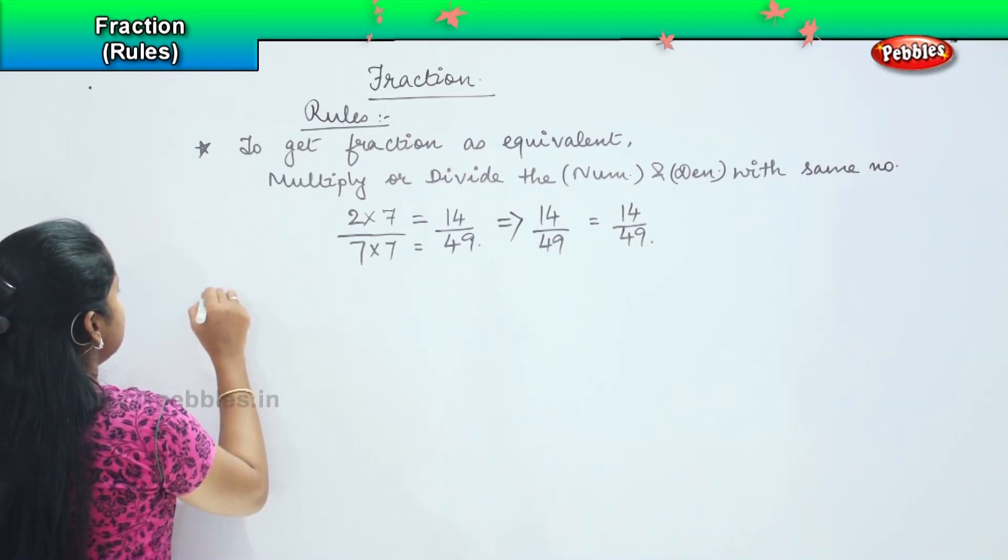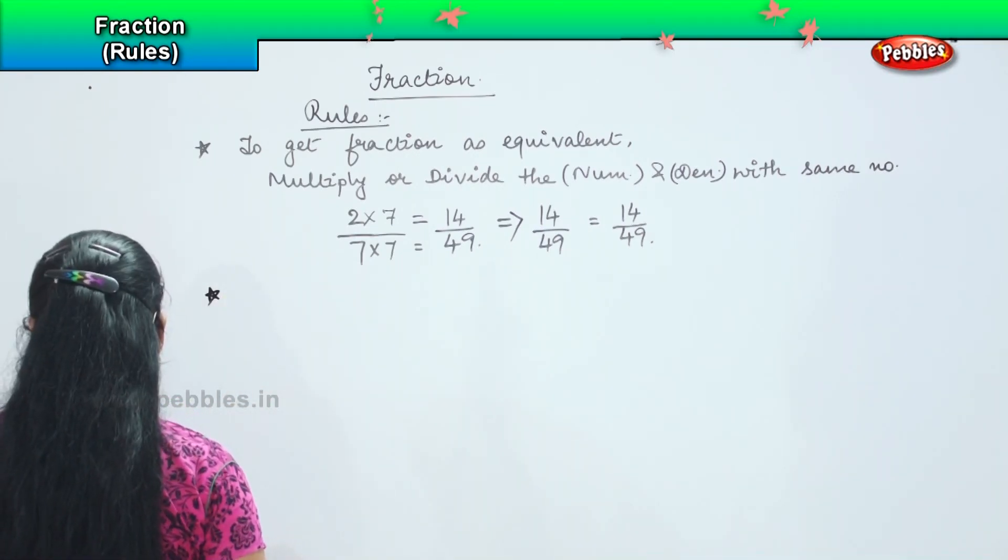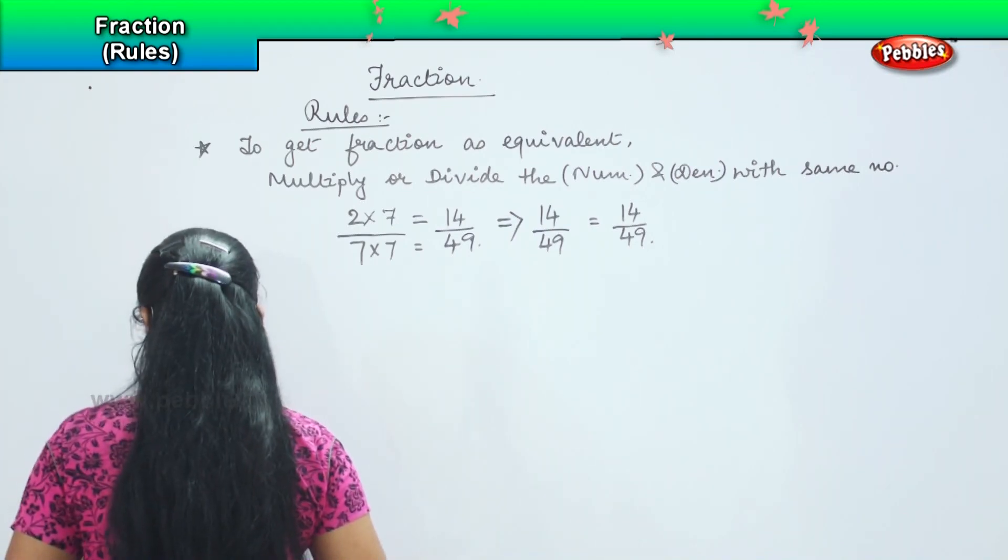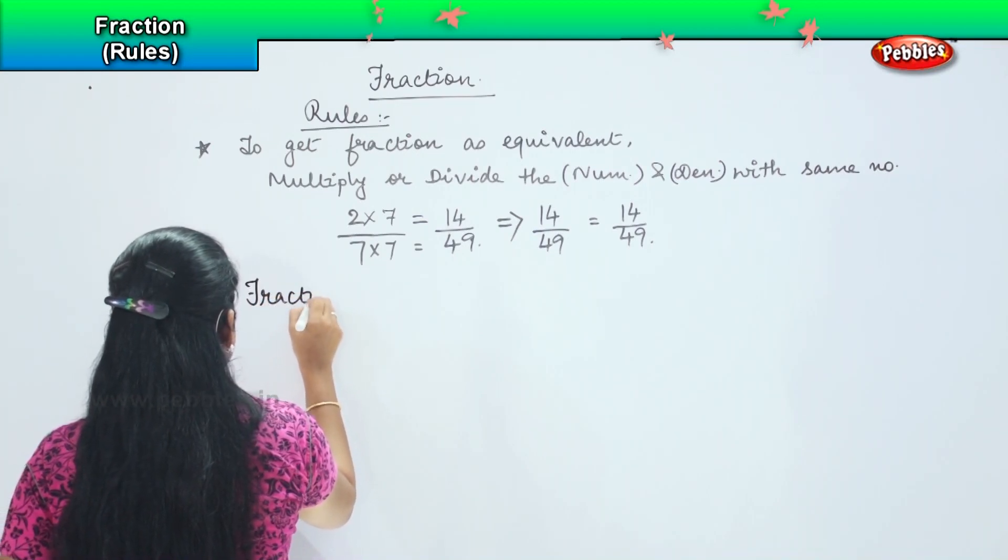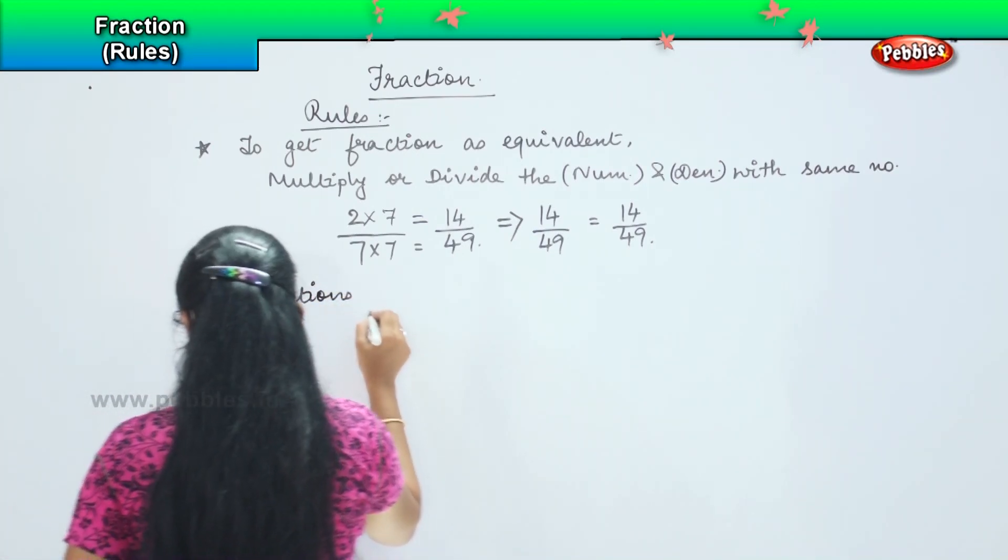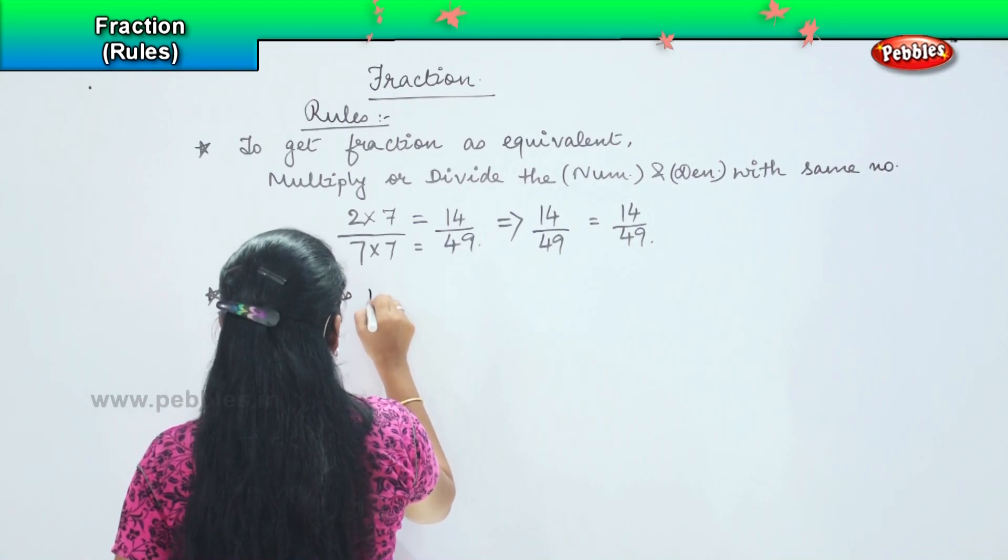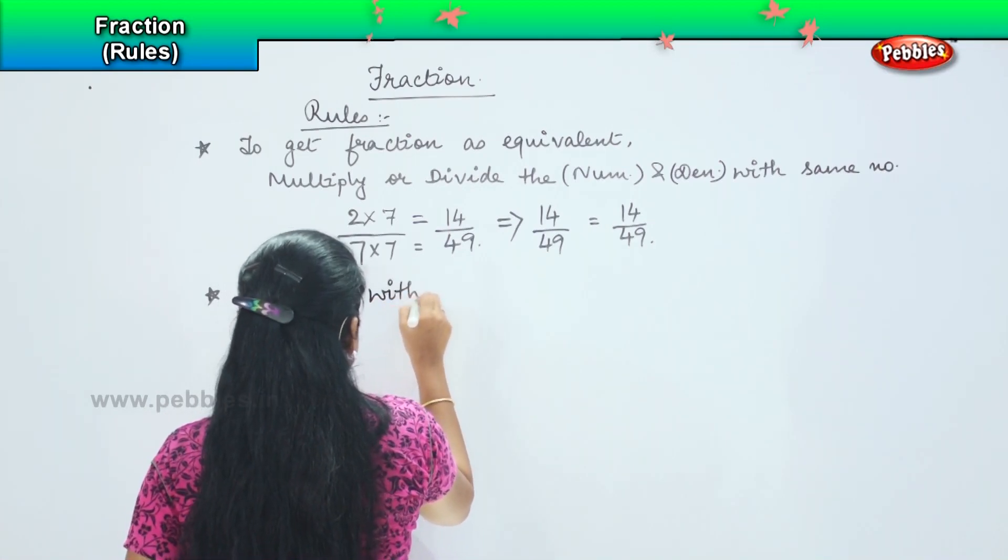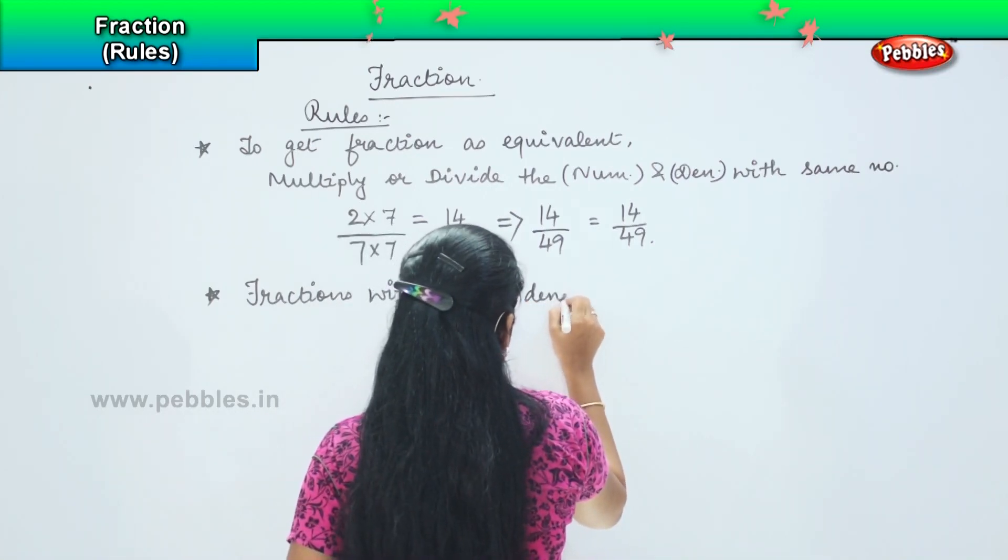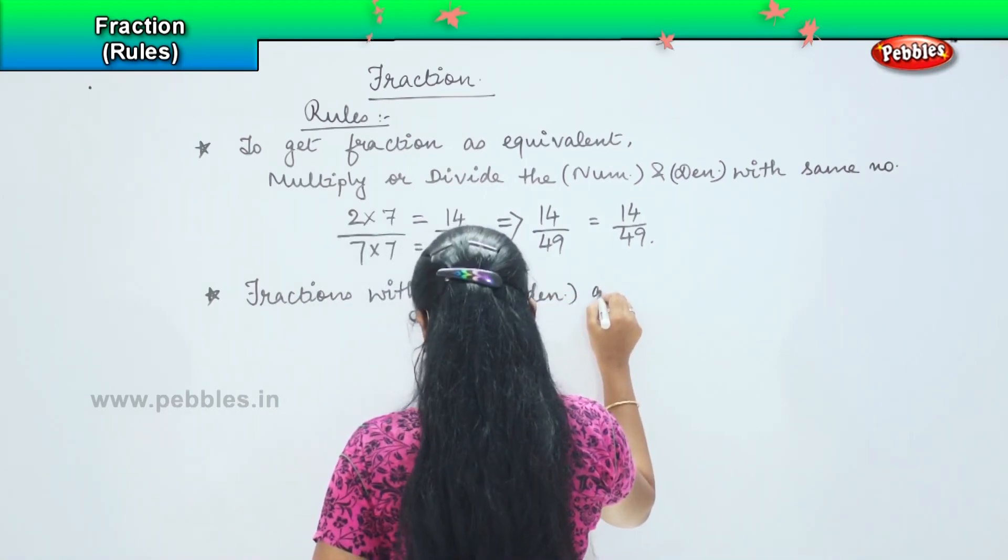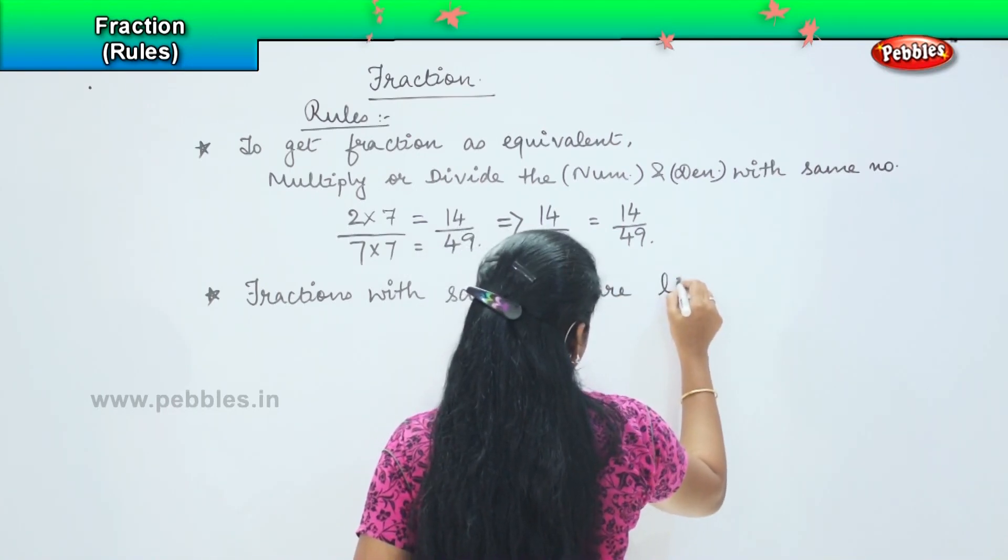Coming to the second rule. The second rule says fractions with same denominator are like fraction.